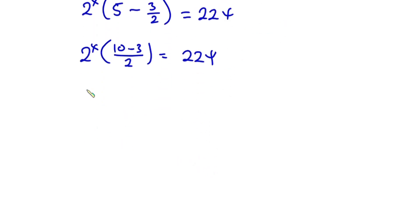So we have 2 to the power x. If we simplify this, we have 7 divided by 2, and this is equal to 2 to the 4th. Now we are looking for x, so let's divide this side of the equation by 7 divided by 2.